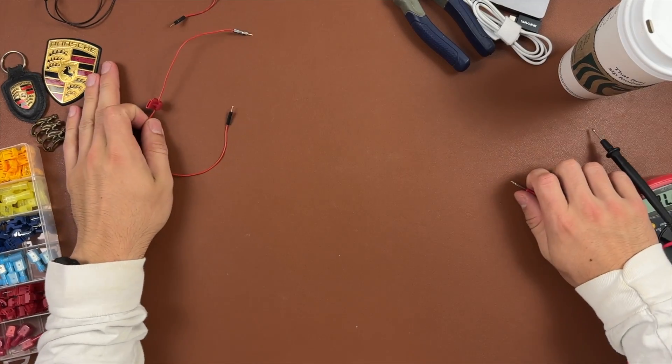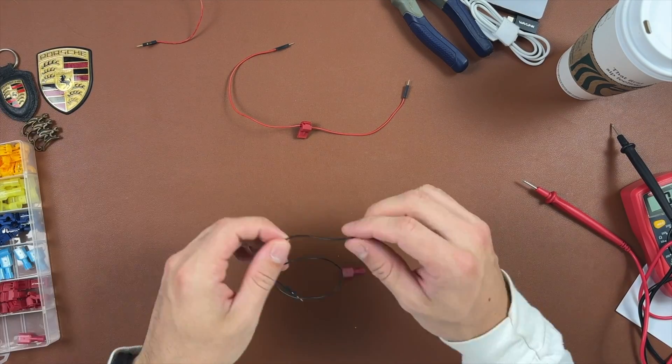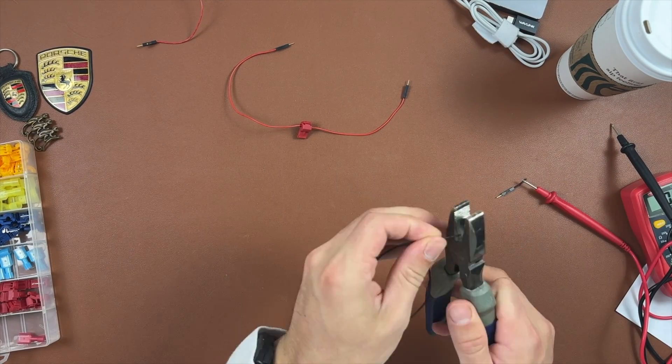The other end of the T-tap is the player joining the party. That connector, in theory, gets crimped on, but in practice is loose, unreliable, and causes issues.